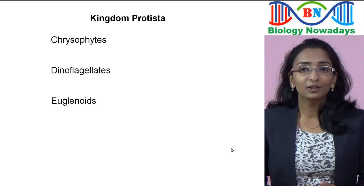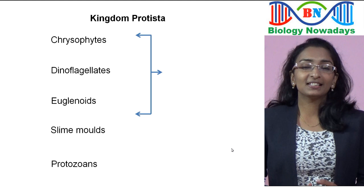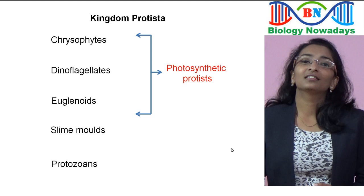Chrysophytes, dinoflagellates, and euglenoids are the photosynthetic protists, whereas slime molds are the saprophytic protists and protozoans are the predatory or parasitic protists.